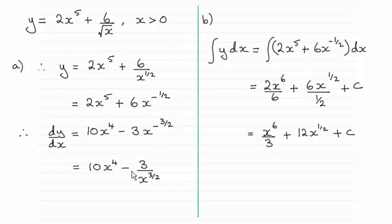So tidying this up, although this is perfectly acceptable at this level here, I've just kept the first term there as 10x to the power 4. x to the minus 3 over 2 is 1 over x to the power 3 over 2.